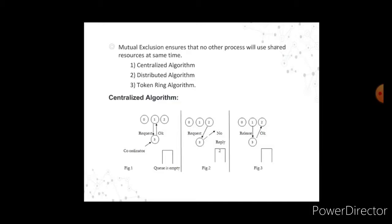In the centralized algorithm, one process is elected as coordinator. Whenever a process wants to enter a critical region, it sends a request message to the coordinator asking for permission. If no other process is currently in that critical region, the coordinator sends back a reply granting permission. When the reply arrives, the requesting process enters the critical region. If the coordinator knows that a different process is already in the critical region, permission cannot be granted.